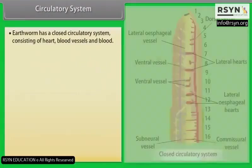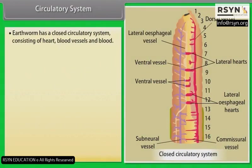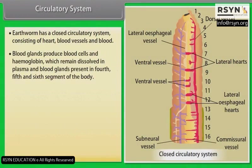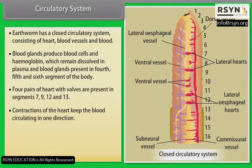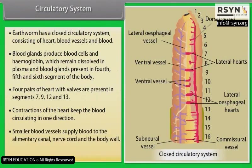Circulatory System: Earthworm has a closed circulatory system consisting of heart, blood vessels and blood. Blood glands produce blood cells and haemoglobin, which remain dissolved in plasma. Blood glands are present in the fourth, fifth and sixth segments. Four pairs of hearts with valves are present in segments seven, nine, twelve and thirteen. Contractions of the heart keep the blood circulating in one direction. Smaller blood vessels supply blood to the alimentary canal, nerve cord and the body wall. Blood cells are phagocytic in nature.